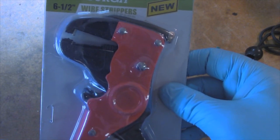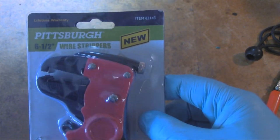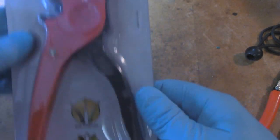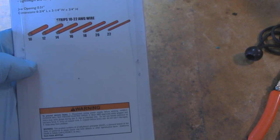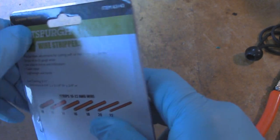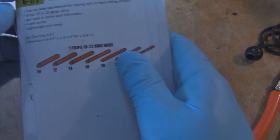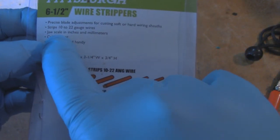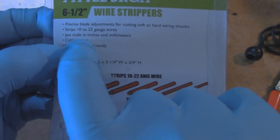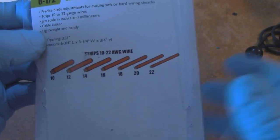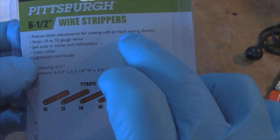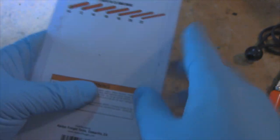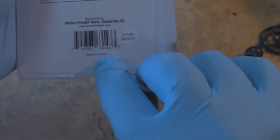For $5.99 from Harbor Freight before any discounts or coupons, you can get a pair of these. It can do anywhere from 10 to 22 wire gauge and it's got a couple extra features for the money. Jaw scale in inches and millimeters, cable cutter, lightweight and handy, precise blade adjustments for cutting soft or hard wiring sheaths. We'll play with that a little bit too. Made in China of course.